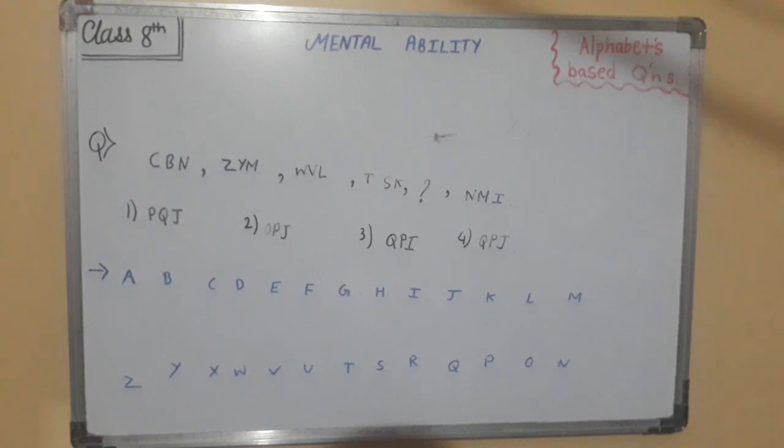So we can see that in first there is C, then B, and then N. After that Z, Y, M. Then W, V, L. Then T, S, K. And then the question mark is there, and then N, M, and then I.